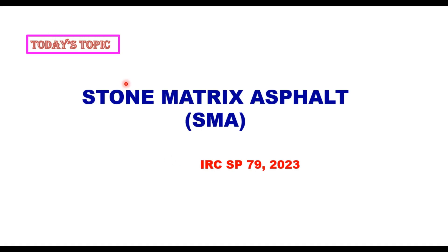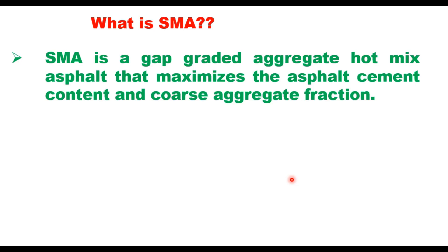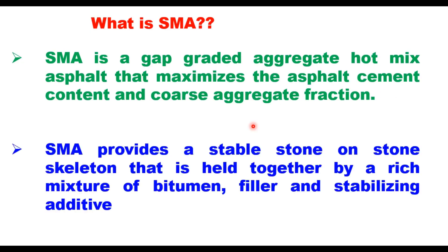Today's topic is Stone Matrix Asphalt, i.e. SMA, as suggested in IRC SP79-2023. SMA is a gap-graded aggregate hot mix asphalt that maximizes the asphalt cement content and coarse aggregate fraction. It provides a stable stone-on-stone skeleton that is held together by a rich mixture of bitumen, filler, and stabilizing additive.